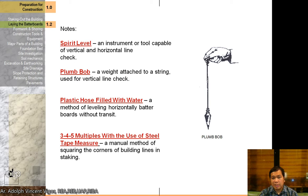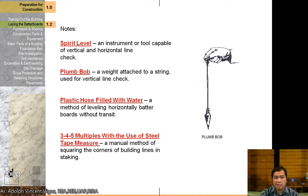A spirit level is an instrument or tool used to check vertical and horizontal lines. A plumb bob is a weight attached to a string used for vertical line checking. Water is a method of leveling horizontally for batter boards with a transit. The 3-4-5 method using multiples with a steel tape measure is a manual method of squaring the corners of building lines and staking.